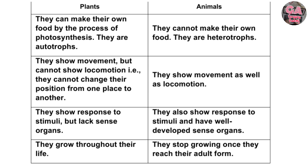Plants can make their own food by the process of photosynthesis — they are autotrophs. Animals cannot make their own food — they are heterotrophs. Plants show movement but cannot show locomotion; that is, they cannot change their position from one place to another.